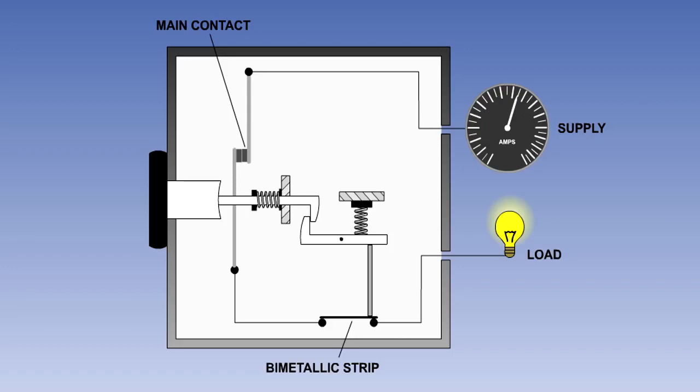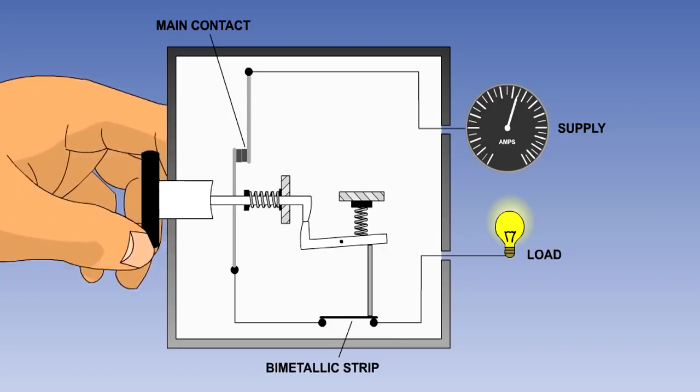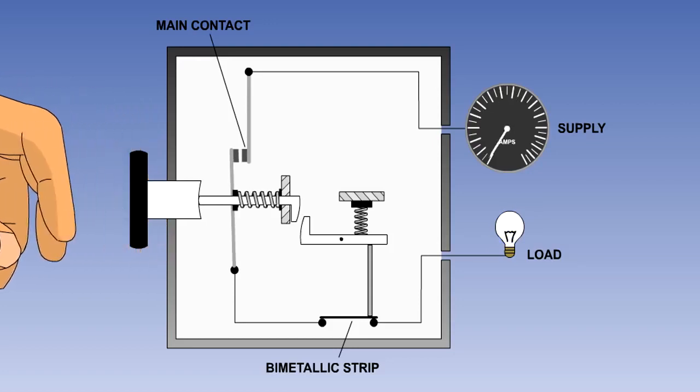This type of circuit breaker can be used as a switch, by pulling out the button. This will override the latch mechanism and open the main contacts.